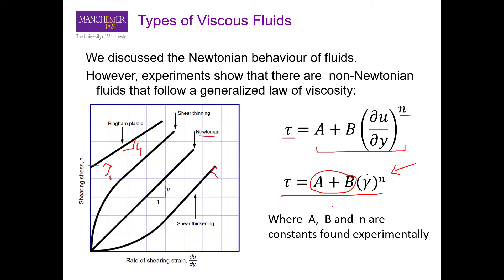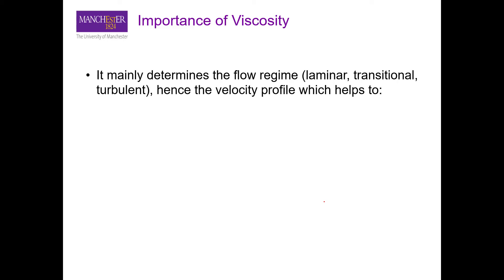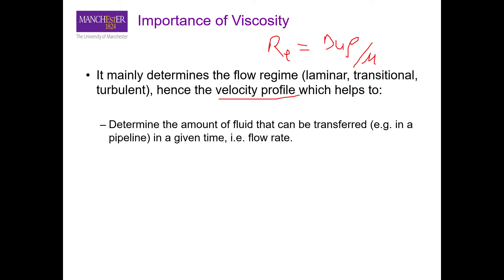Viscosity is a really important factor, and its most important implication is that it dictates which flow regime the flow will be in. Recalling the Reynolds number from part 2 — Re = ρuD/μ — the value of viscosity determines whether the fluid is in the laminar, transition, or turbulent region. This indirectly affects the velocity profile, which in turn determines the flow rate, since flow rate depends on velocity.